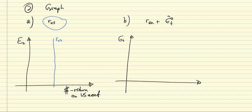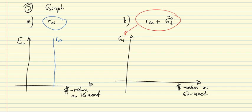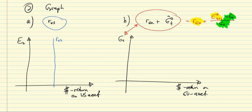Second, we draw the EU return curve — EU interest rate plus E-hat ET — in the same space, with E_t on the vertical axis and the dollar return on the horizontal axis. How does this sum depend on the exchange rate? We have: EU interest rate + (E_{t+1} - E_t) / E_t. As E_t varies, given a fixed interest rate and fixed expectation, the lower the exchange rate, the higher the dollar return on the EU asset.